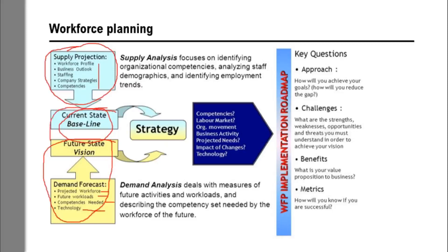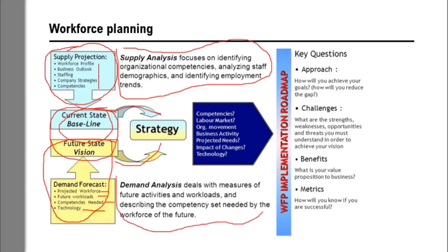Based on the current state baseline and the future state vision, a business strategy is implemented by human resource management. The supply analysis focuses on identifying organizational competencies, analyzing staff demographics, and identifying employment trends. The demand analysis also measures future activities and workloads and describes the competency set needed by the workforce of the future.